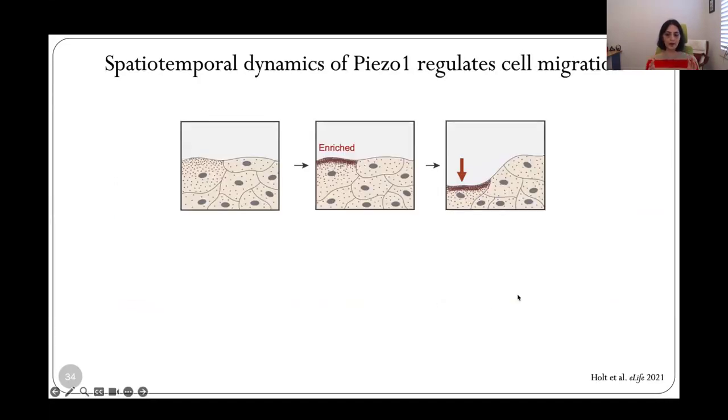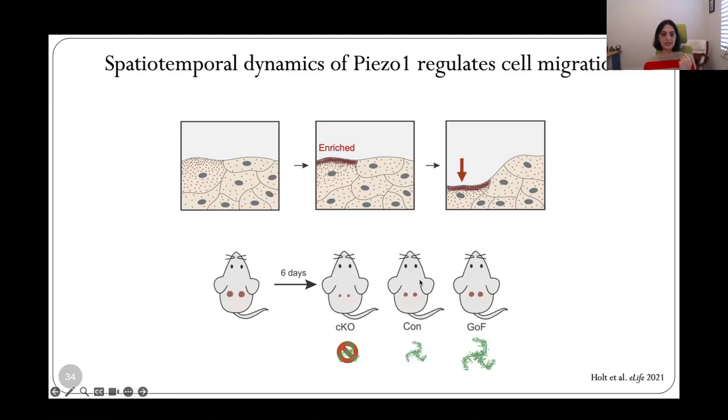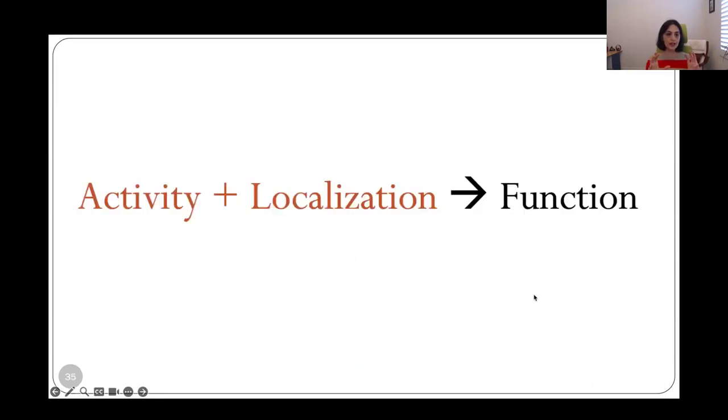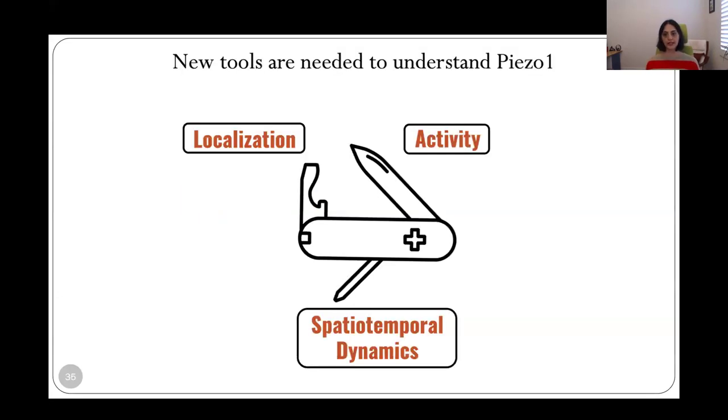So altogether, we learned that Piezo1 regulates the speed of wound healing through the enrichment of channels at the wound edge, leading to an increase in local retraction, which then slows wound healing. And that's why we see faster wound healing in the absence of the channel and slower wound healing when you increase the channel activity with the gain-of-function mutation. Something that jumped out from this work was that it's not just the activity of the channel. It's also where the channel is located. It's the spatiotemporal dynamics of channel location that contributes to its functional effects. So it's important to track both. But current approaches force us to pick one or the other. You can't look at both at the same time. And so new tools are needed to be able to do this.